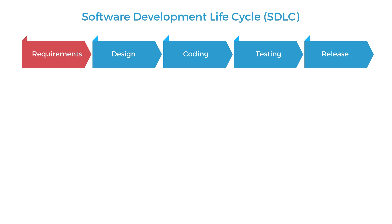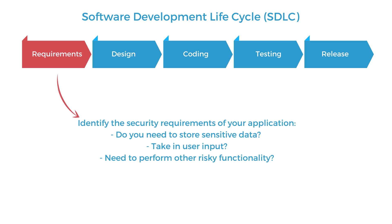Starting from the requirements phase, when you're identifying the functional requirements of your application, you should also try to identify the security requirements of those functionalities as well. For instance, if you are transporting data, do you also need to store and transport sensitive data that you should protect from third parties? Or do you need to take in user input and process it? In that case, you might need to think about implementing some sort of input validation. And will this app perform risky functionality such as file uploading, and what kind of security measures do you need to implement to make sure it's done securely?